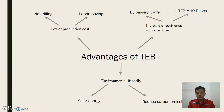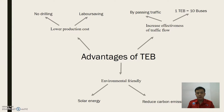Secondly, T-E-B also increases the effectiveness of traffic flow. As I mentioned, T-E-B has a tunnel underneath it that allows cars to pass through. While there is a traffic jam, this T-E-B can pass by the traffic jam without interrupting other road users, such as cars.